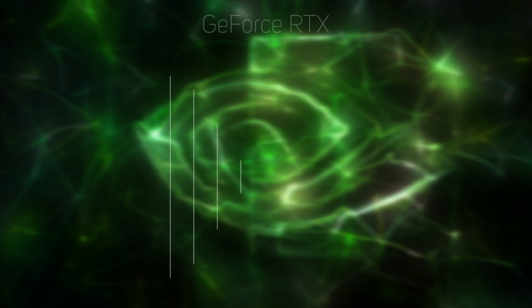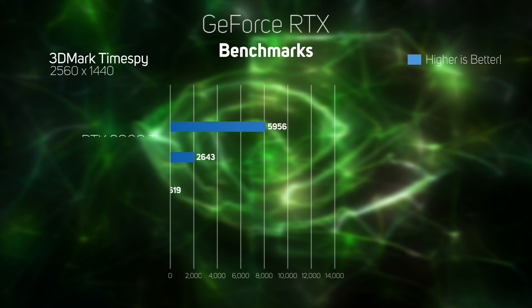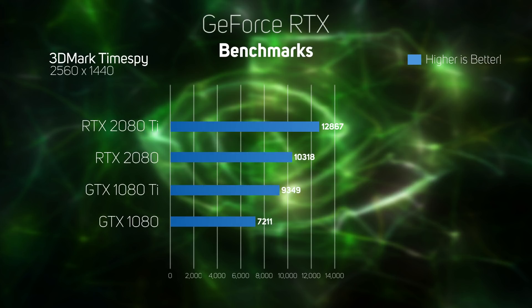We also ran the synthetic benchmark 3DMark TimeSpy. Being synthetic, this doesn't really tell you how fast a graphics card will run your favourite games, but it gives a decent indication of relative performance. In this test, the RTX 2080 proved 10% faster than the GTX 1080 Ti, and the RTX 2080 Ti 38% faster — a similar performance step up as we saw in the three games we tested.